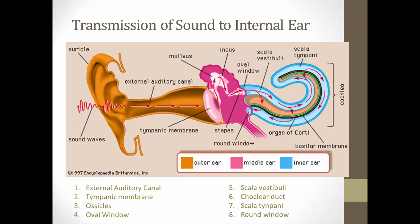To transmit sound waves to the organ of Corti where they're converted into electrical impulses, sound waves travel through the external auditory canal, causing the eardrum or tympanic membrane to vibrate. That vibration is transmitted to the ossicles, and from the ossicles to the oval window, so that the oval window is now vibrating. The oval window sets up wave-like actions through the scala vestibuli — filled with perilymph — and depending on the frequency, causes a specific part of the basilar membrane to vibrate.